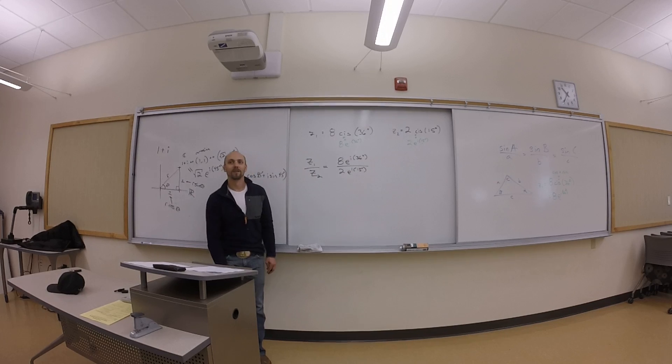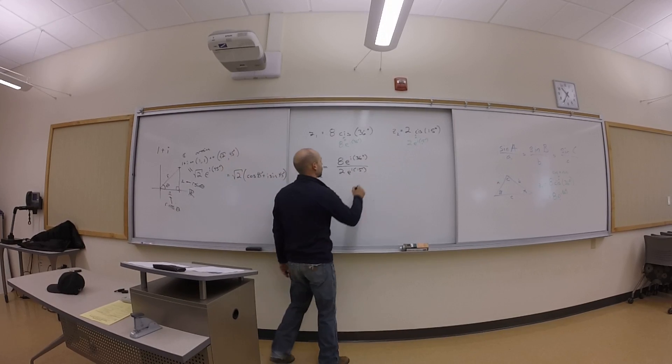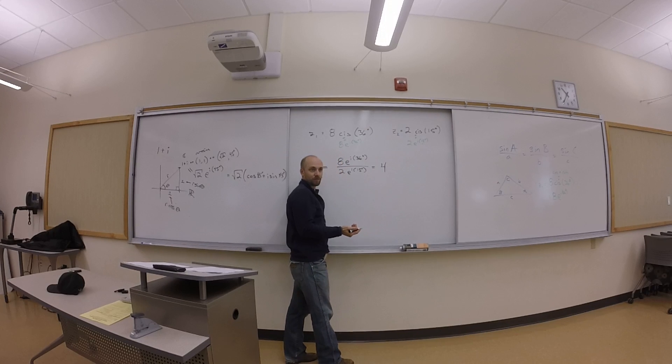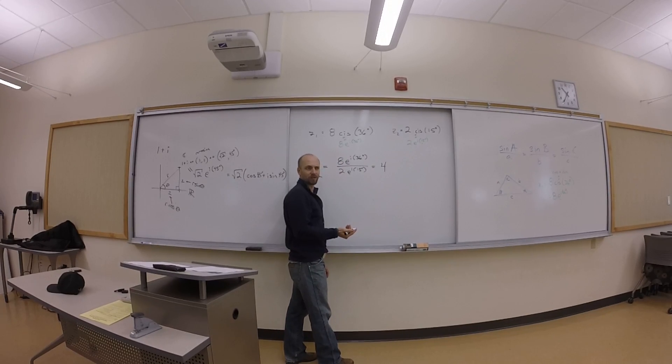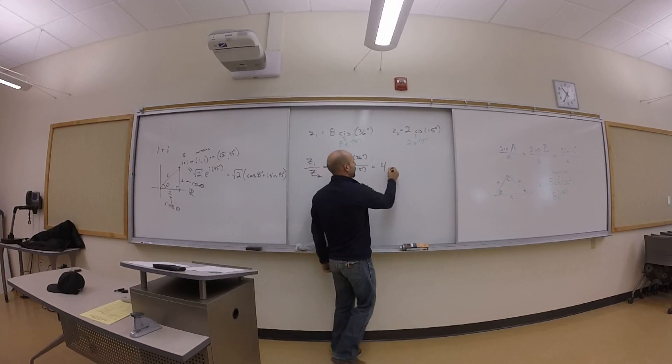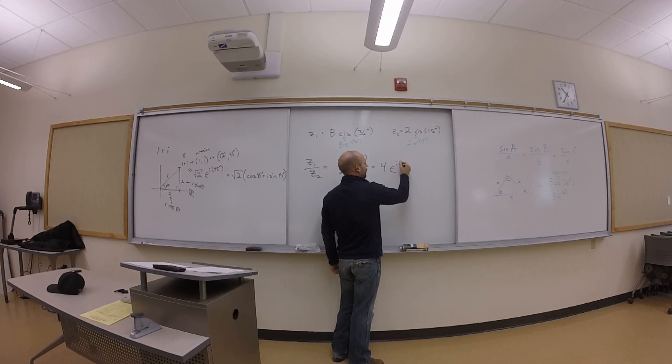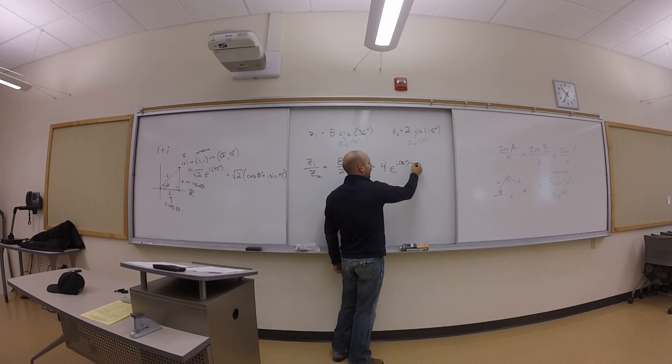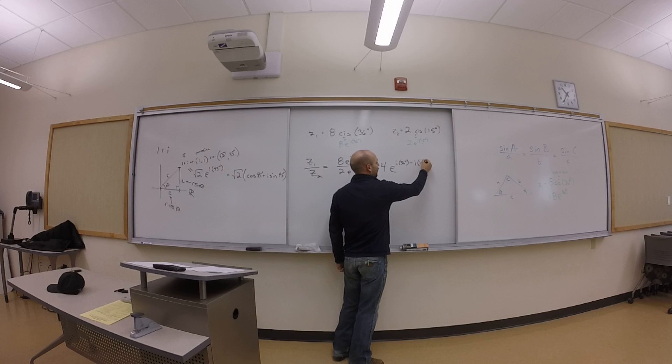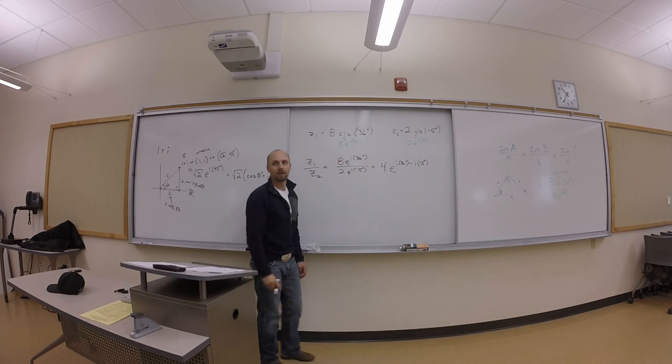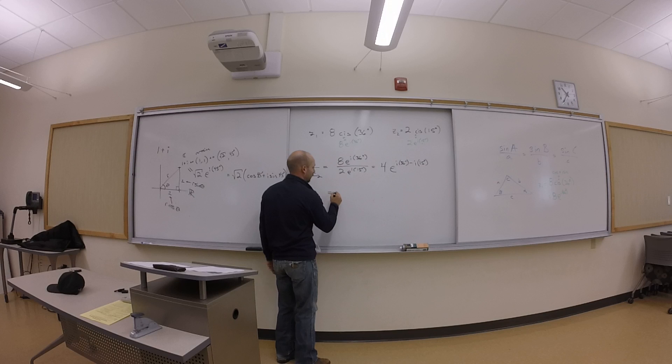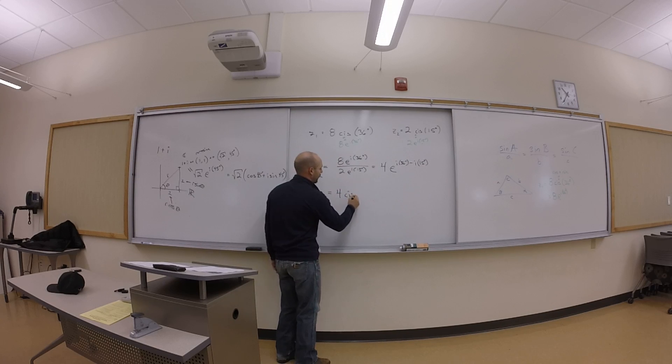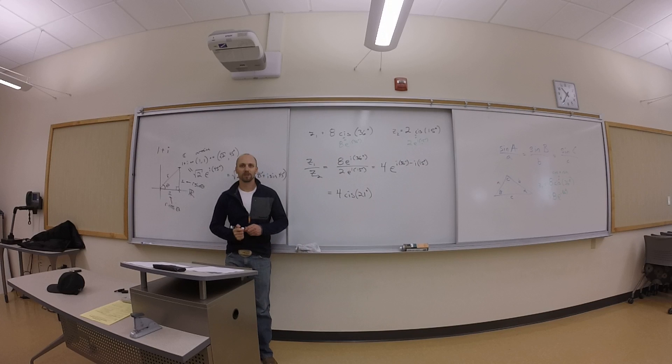Subtract your power, right? Yeah. So you subtract the powers. So you'll get 4, right? Where did I get this 4? 8 divided by 2. 8 divided by 2 is 4. And then I get e i 36 degrees minus i 15 degrees, which is 4 cis 21 degrees. You guys cool with that? Questions? You want to see one more?